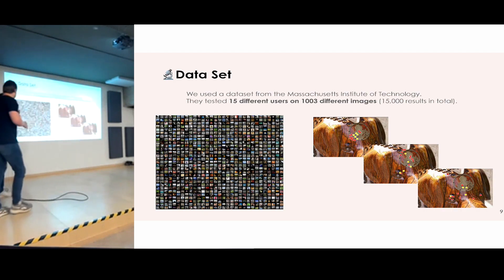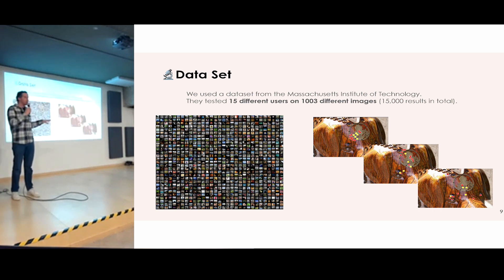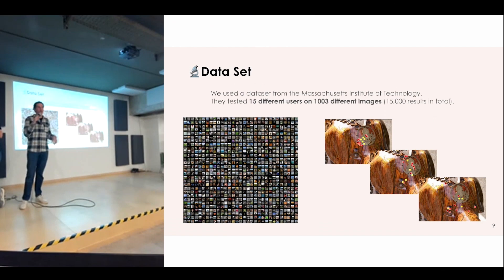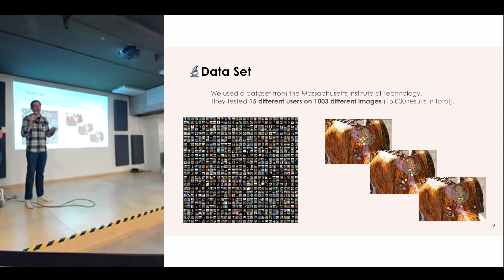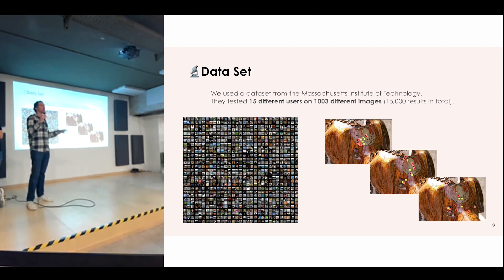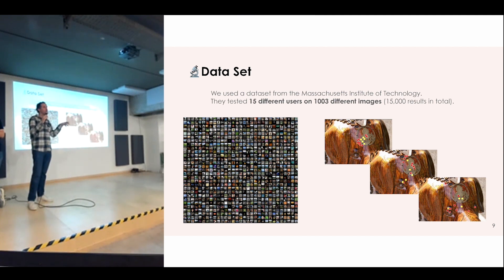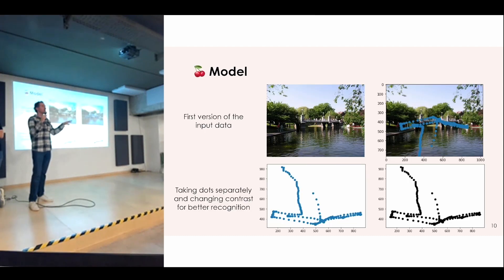Hello, good afternoon, I'm Alfredo. I'll go a bit deeper into the project. When it comes to a data science project, obviously the first step is to get the data. We didn't have fancy glasses to generate data, so we started looking online. There are universities that have done similar projects before, and we found a dataset from a project done some years ago that is related. This dataset has around 1000 pictures as input and the gaze patterns of people on those pictures as output.